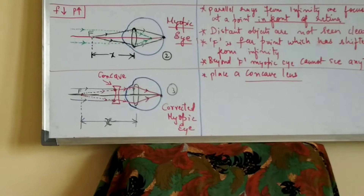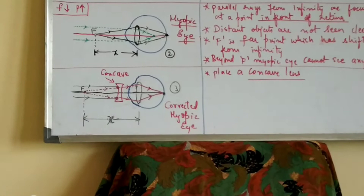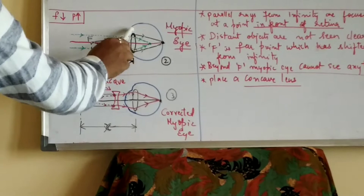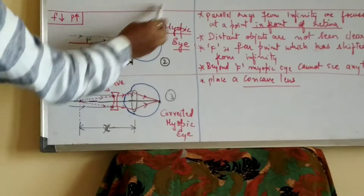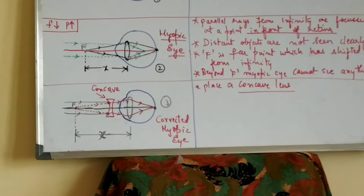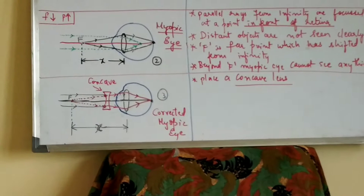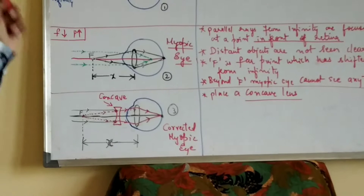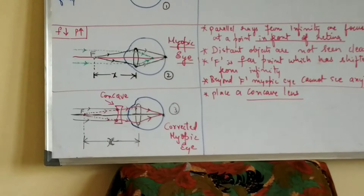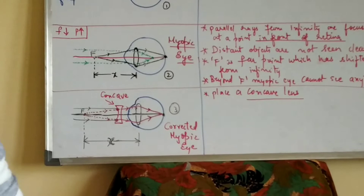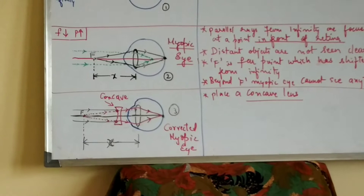There are two reasons for the myopic eye. One is an increase in the curvature of the eyeball — the eye length keeps increasing due to the action of ciliary muscles. The second reason is a decrease in the focal length, resulting in an increase in converging power. These two are the reasons for the defect of myopia.